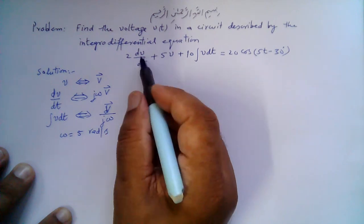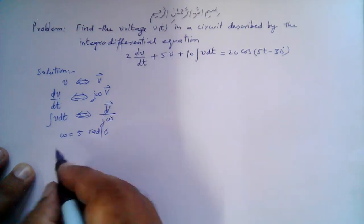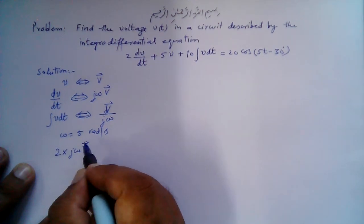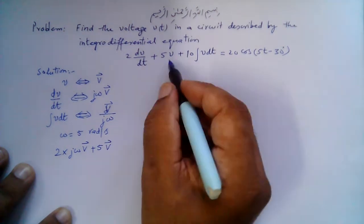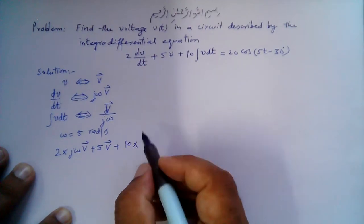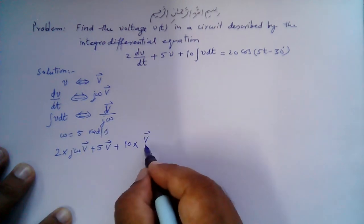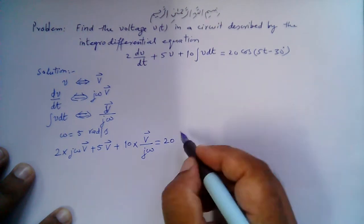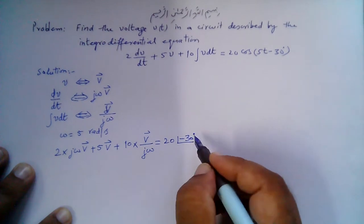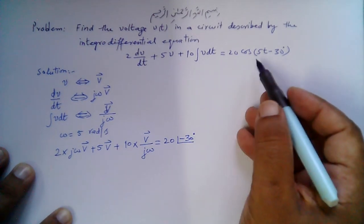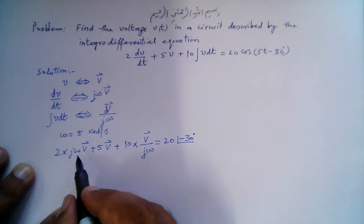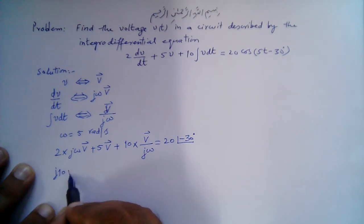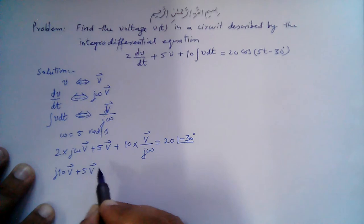Now transforming to the phasor domain: the 2·dV/dt term becomes 2·jωV̄, the 5V term becomes 5V̄, and the 10∫V dt term becomes 10·V̄/jω. This equals 20∠-30°. Substituting ω = 5 gives j10V̄ + 5V̄ + 10·V̄/j5, which equals 20∠-30°.